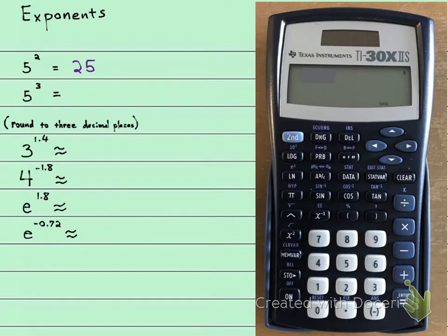So for this example, 5 to the third, we're going to press 5, and then we're going to press this button right here. Some people call it a caret, some people call it a top hat, I call it a top hat.